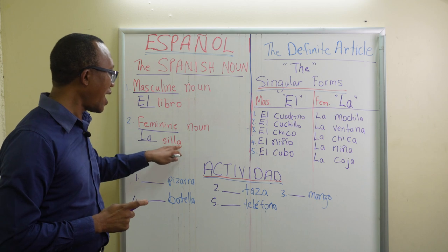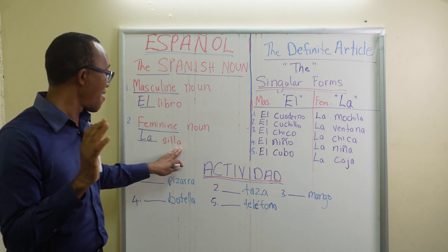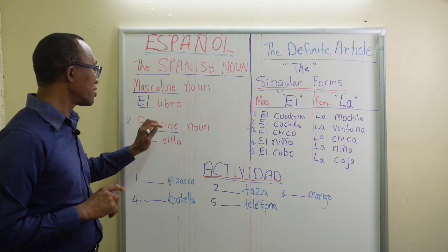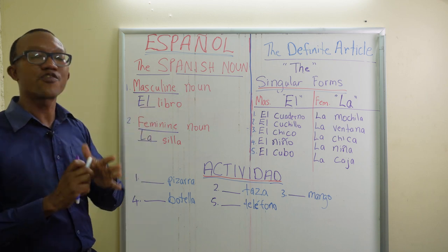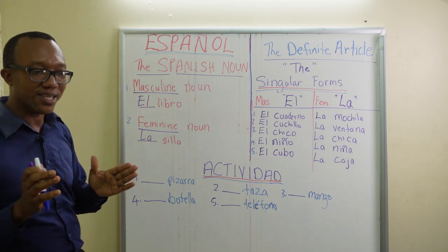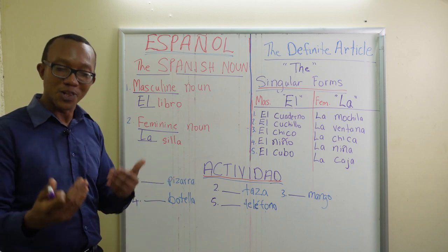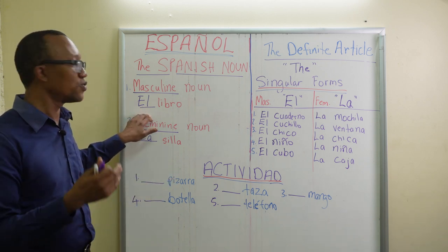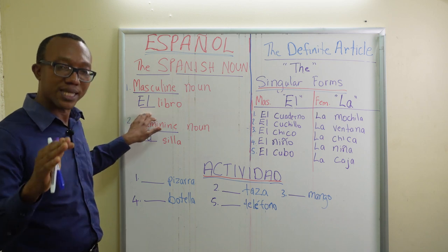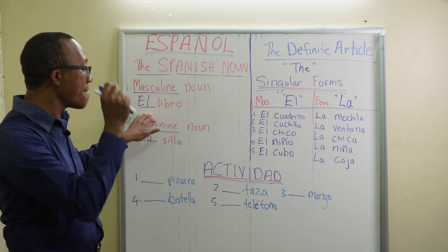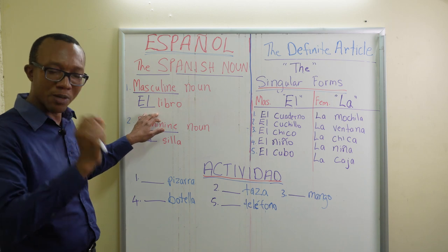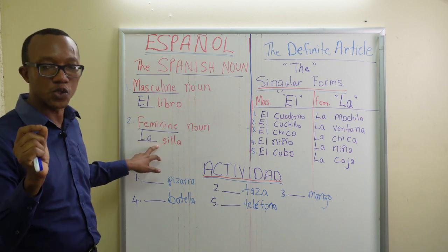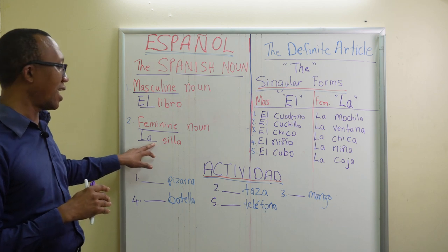Do not always assume that once a word ends in 'a' it is feminine — there are exceptions. You have to learn and be exposed to these. When you use a dictionary, it can help you: you will see a bracket 'm' for masculine, so you know to use 'el,' and 'f' for feminine, so you know to use 'la' with that noun.